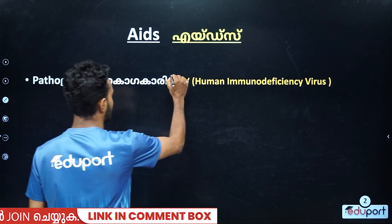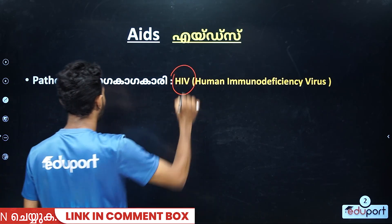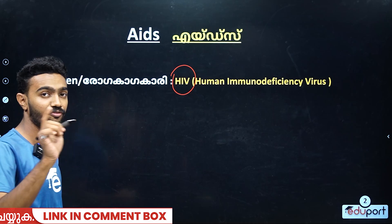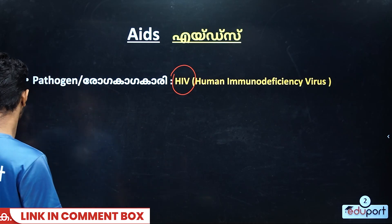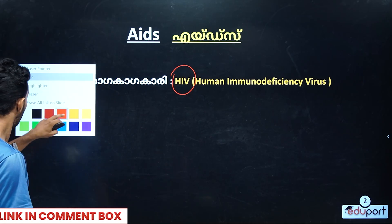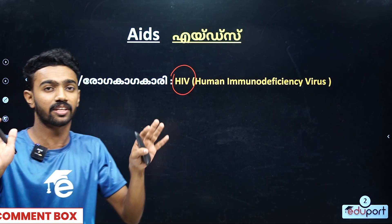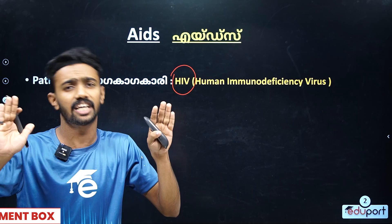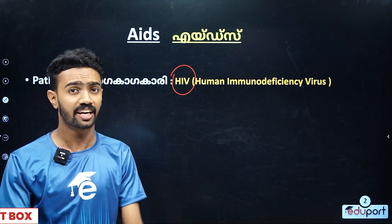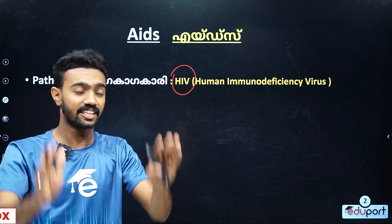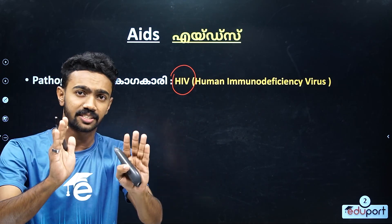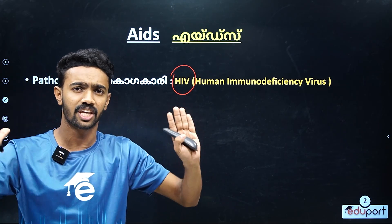The pathogen is called HIV — that is Human Immunodeficiency Virus. Human Immunodeficiency Virus — it is simple. What is the HIV virus? It is because of AIDS. AIDS is equal to HIV.